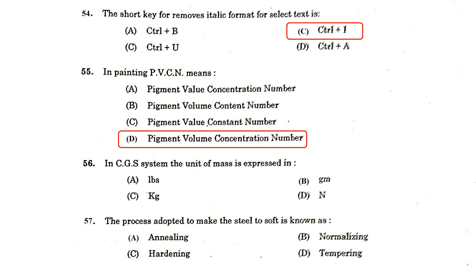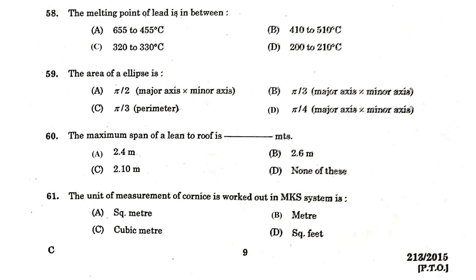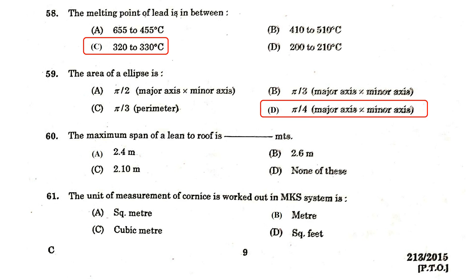In the CGS system, the unit of mass is expressed in grams. The process adopted to make steel soft is known as annealing. The melting point of lead is between 320 to 330 degrees Celsius. The area of an ellipse is found out by π/4 × major axis × minor axis. The maximum span of a lean-to roof is 2.4 meters.